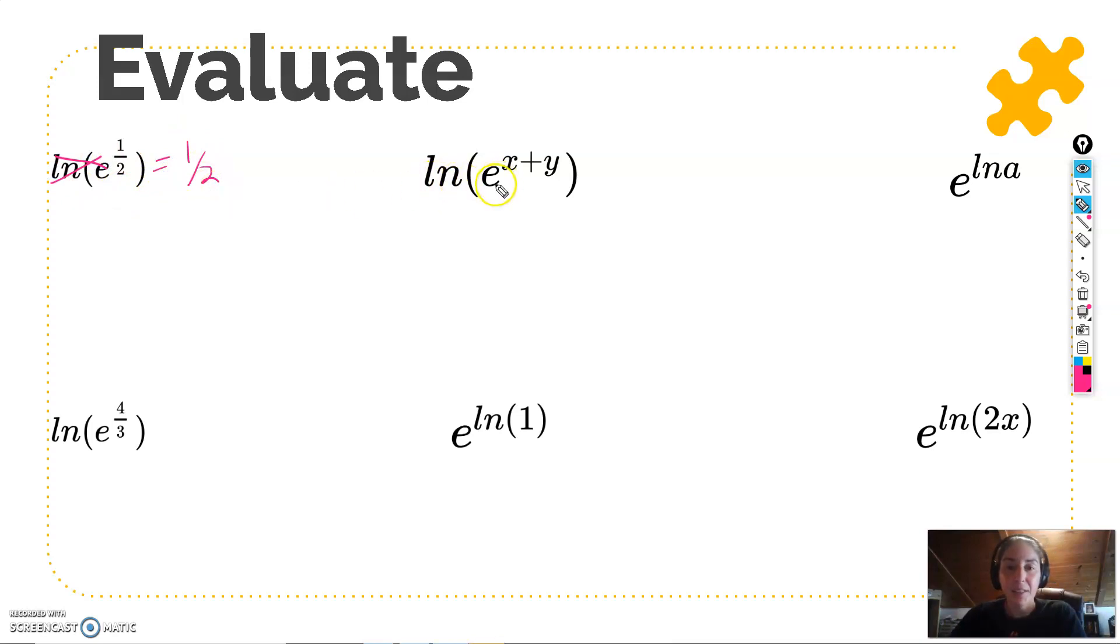What about ln of e to the x plus y? Inverse functions again, cancel out. What about e to the ln of a? e to the ln, inverse functions, those guys cancel, so I'll just be left with a.